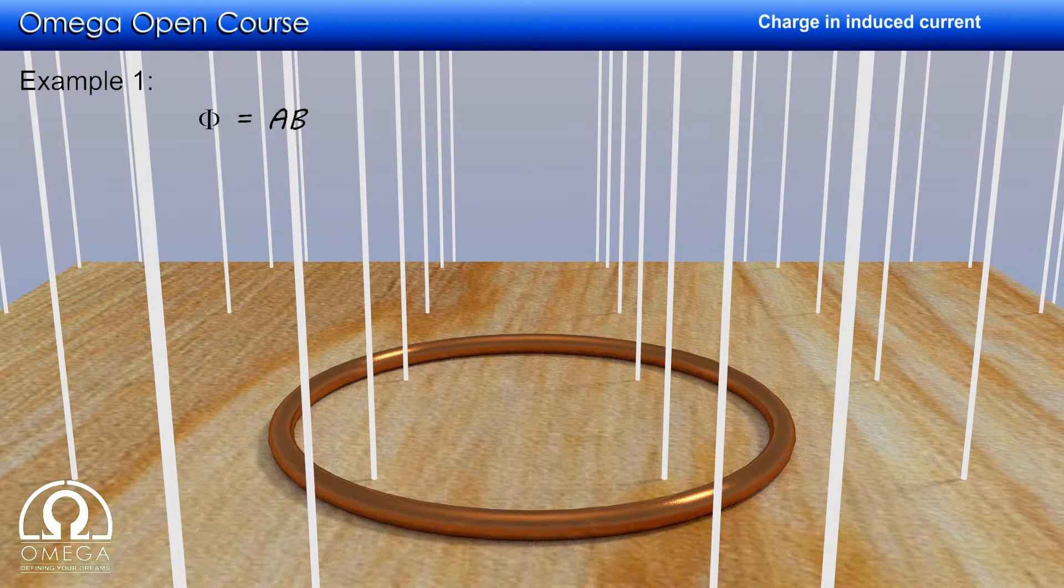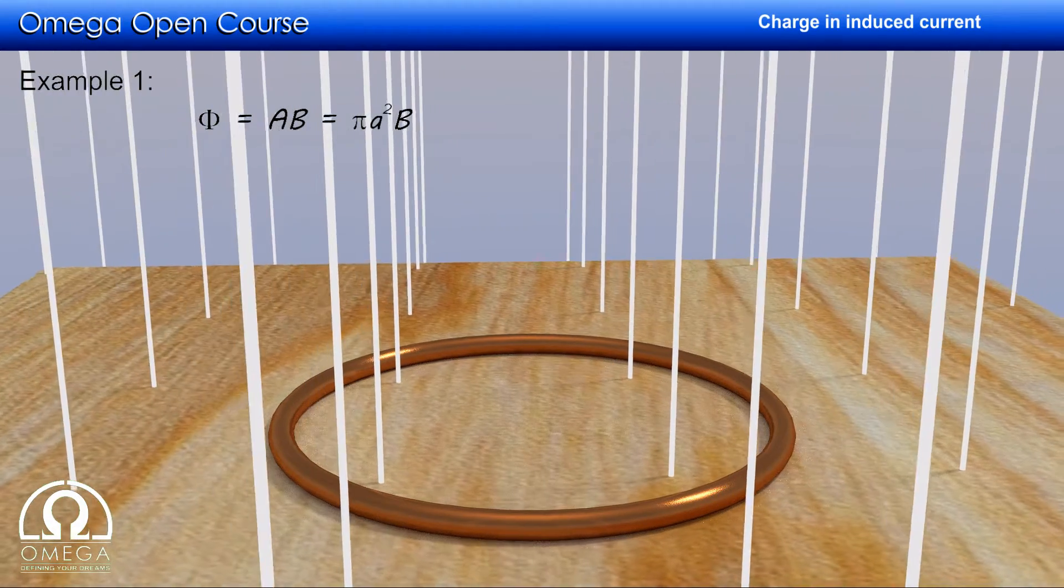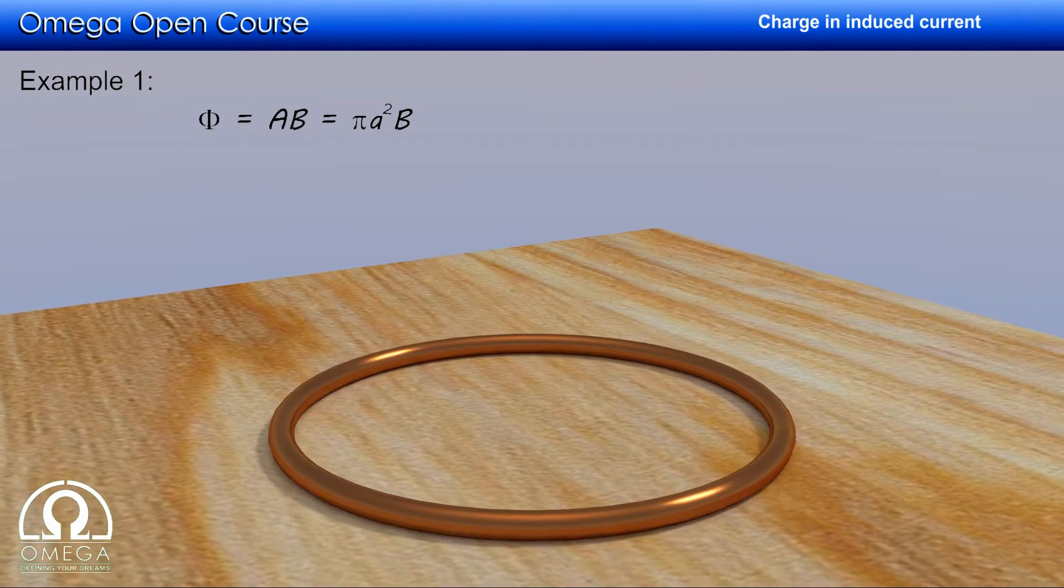Since the magnetic field is perpendicular to the ring, the flux through the ring is given by area times magnetic field, that is πA²B. When the magnetic field is switched off, the flux decreases, emf is induced and charge flows in the ring.